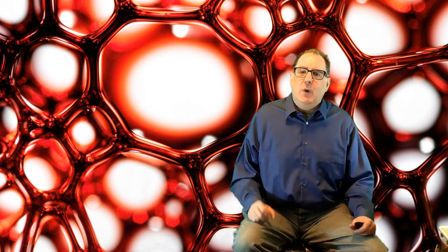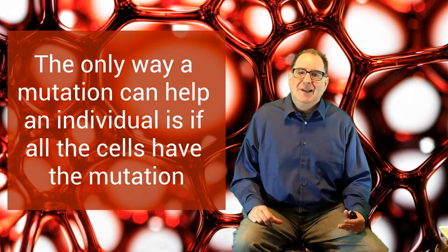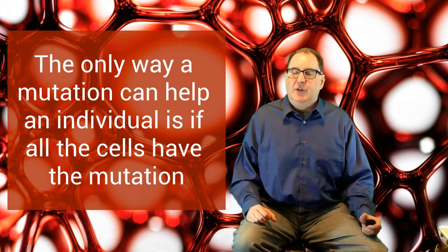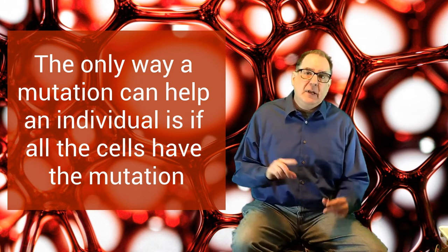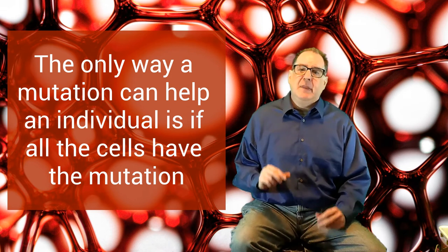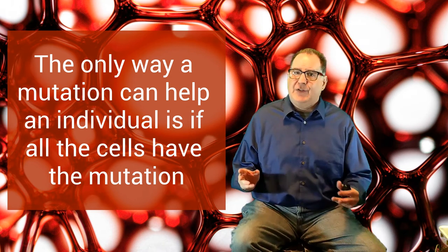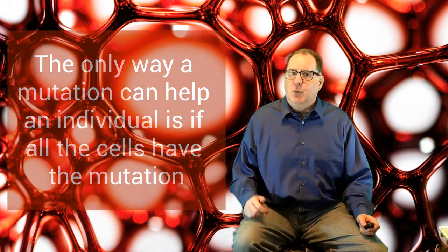And it wouldn't affect any of George's offspring. The only way a mutation can help an individual is if all of the individual's cells have the mutation. In order for this to happen, the mutation needs to happen to a sex cell, a sperm or an egg of one of the parents. Now, if this mutation happened in George's mother's egg and George came from that fertilized egg, then all of George's cells would have the mutation and it can affect him. Now, George would be able to run faster and he could pass that trait on to his children.